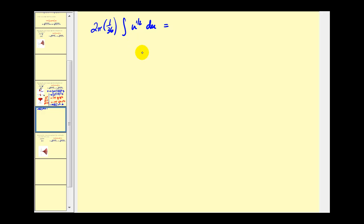Let's integrate with respect to u. This would be π/18, then u^(3/2) divided by 3/2. We'll leave off the +C because this is a definite integral.